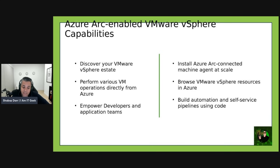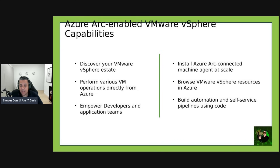AVS and VMware vSphere are two different things. Some of the capabilities specific to VMware vSphere include: you can discover VMware vSphere inventory — VMs, templates, networks, data stores, clusters, hosts, resource pools — and register those resources with Azure Arc at scale. You can also perform various virtual machine operations directly from Azure such as creating, resizing, and power cycling operations such as start, stop, and restart for VMware VMs, consistently with Azure.